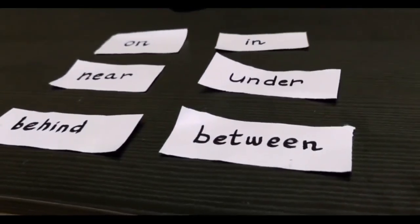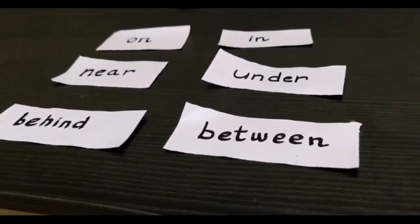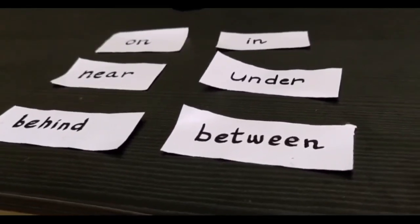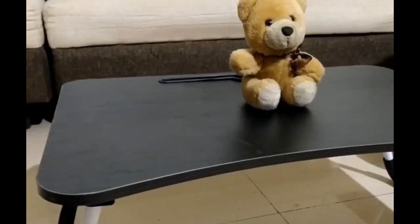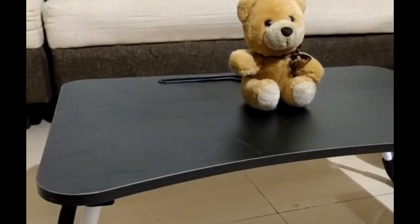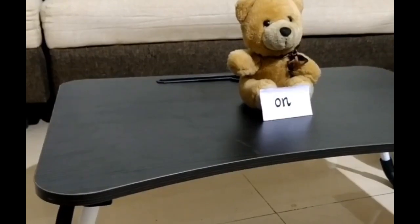Now we are going to place a few objects and you will be placing these flashcards and telling where that particular thing is. Can you see the teddy? Where is it placed? On the table. So it is on the table. On.